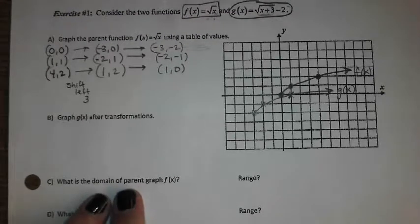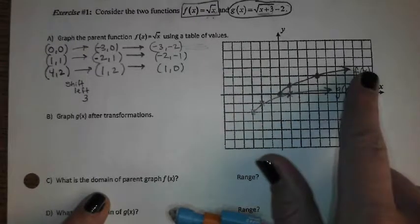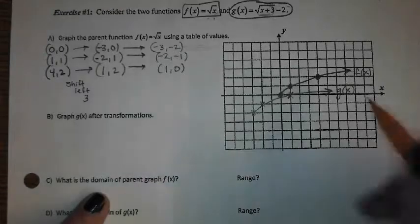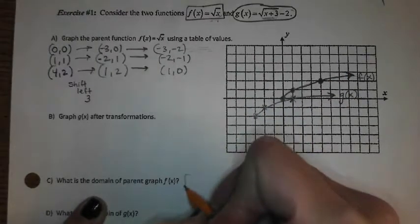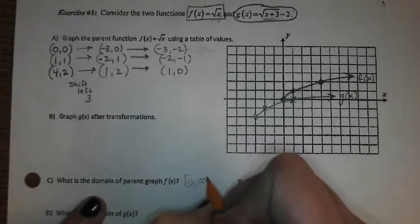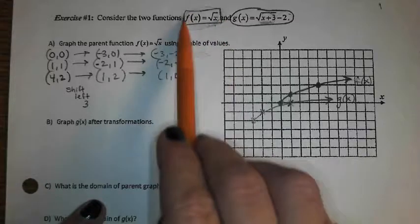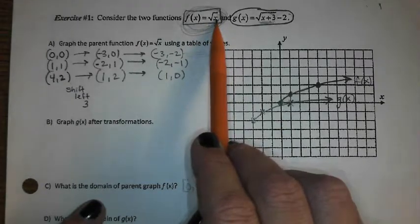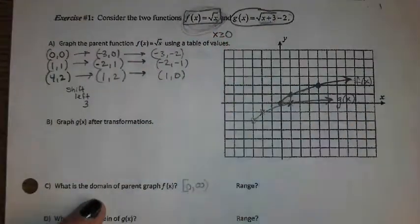Part c asks for the domain of the parent graph. We've graphed it so we can look at f of x from a graphing perspective. What's the smallest x-coordinate, the furthest left this ever gets? 0. Does that include 0? Yes, so I'm going to use brackets. What's the furthest right it ever gets? Infinity — and infinity always uses parentheses. From a function rule perspective, whatever's underneath the radical has to be greater than or equal to 0, because I cannot take the square root of a negative. So whatever's under the radical, we set it greater than or equal to 0, and that is already solved for x.